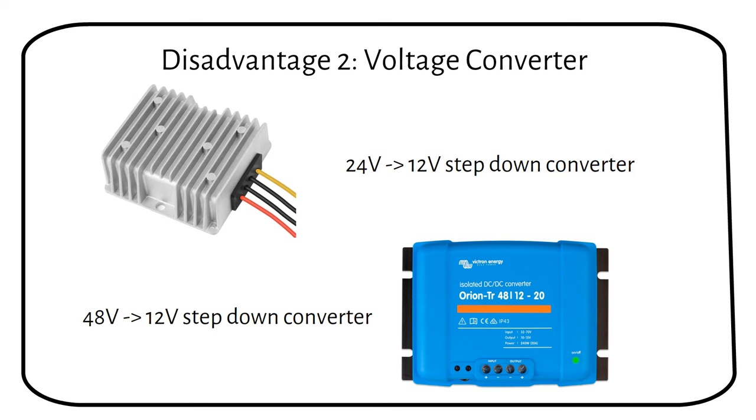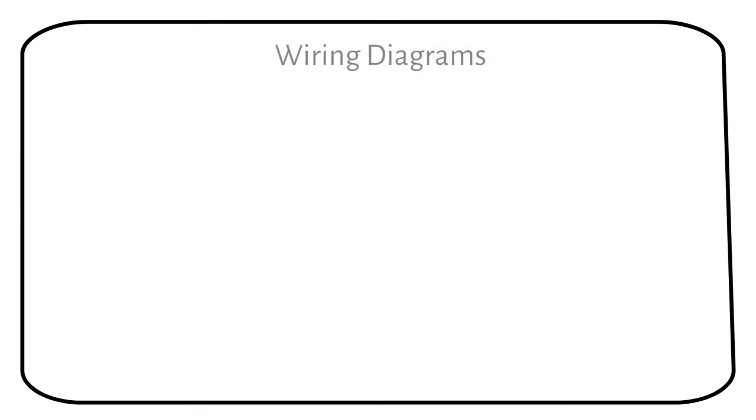Enough theory for now. Let's explore some wiring diagrams. Here are some wiring diagrams for having batteries in series. We already saw the first one: two batteries in series. This is called a 2S configuration. We get a total of 24 volts at 100 amp hours.